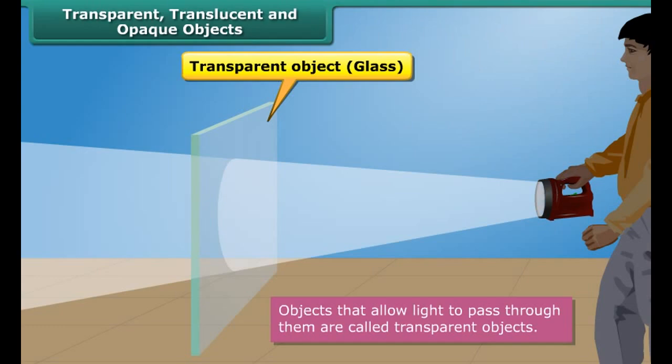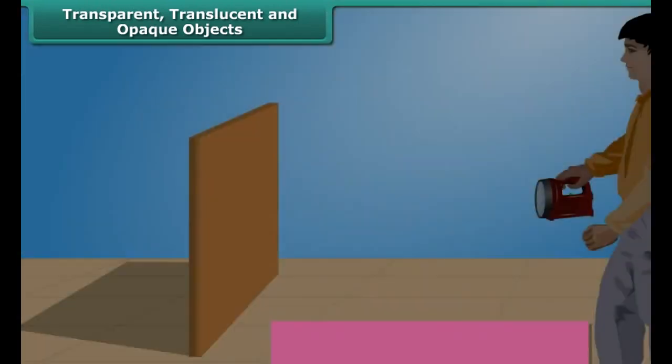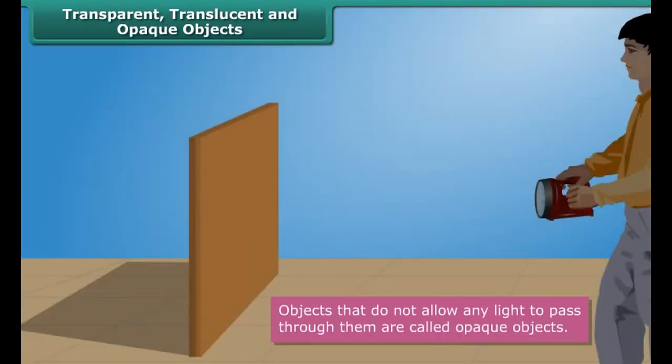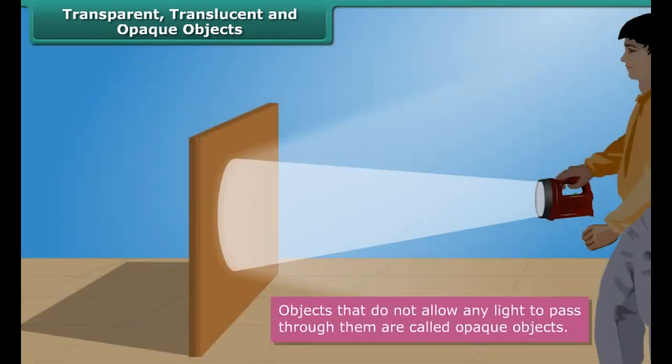Luminous objects are sources of light. They are classified based on their treatment of light as transparent, translucent, or opaque.